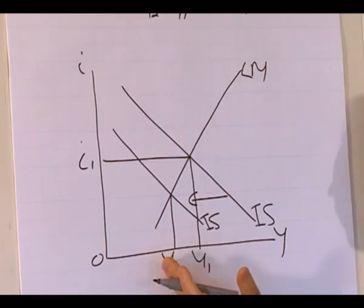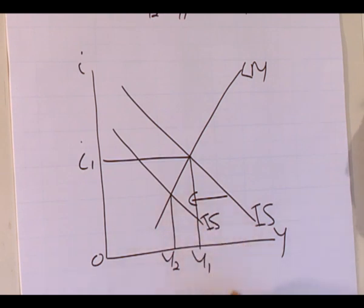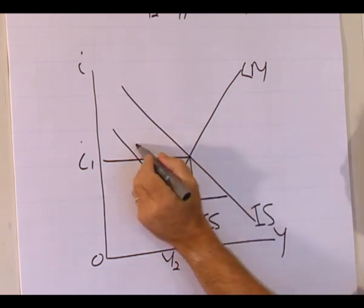Government must follow an expansionary fiscal policy. That is, government must either increase government spending or decrease taxes. The demand for goods and services will increase, shifting the IS curve to the right.